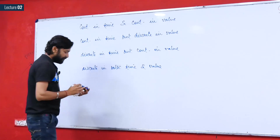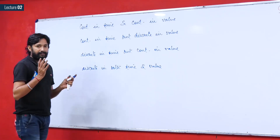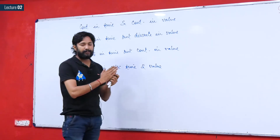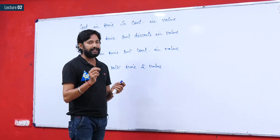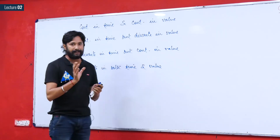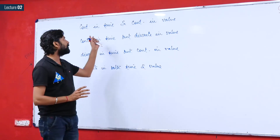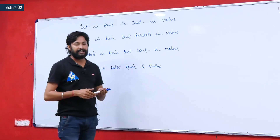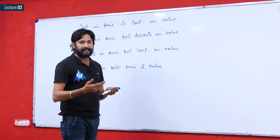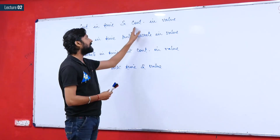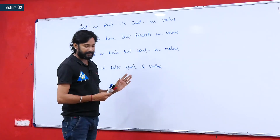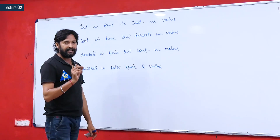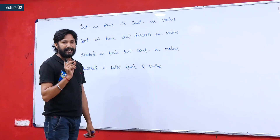If a signal is continuous in time, it must be present at every instant from the leftmost to rightmost limit of time. If the values taken by the signal can be any value — integer or fractional — it is called continuous in value. A signal is called an analog signal if continuity is maintained in at least one domain.